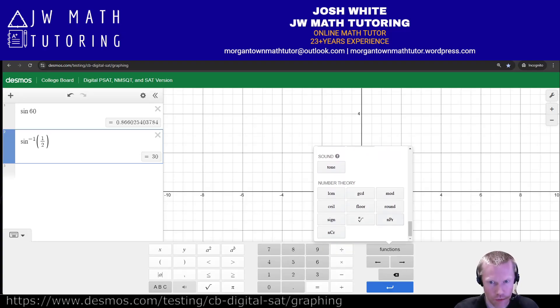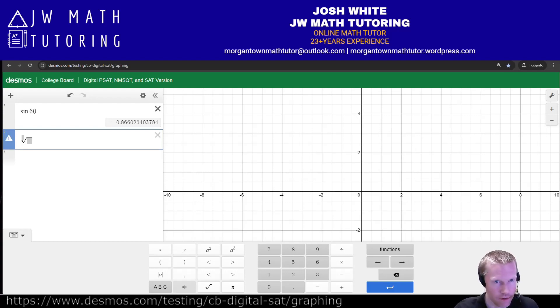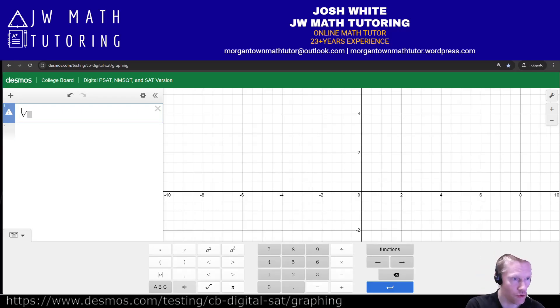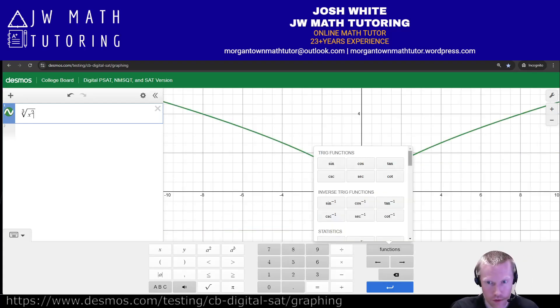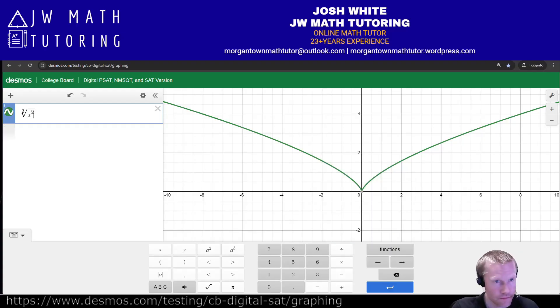The one thing that you do, that you may need to use that you would have to access in the function menu is this right here. So let me just get rid of this. So this is a root, but to a specific index, so not a square root. But let's say you wanted a cube root or a fourth root or a fifth root or whatever, okay? That you would need to go to the function menu and then scroll all the way down to the bottom and then grab this from down here.